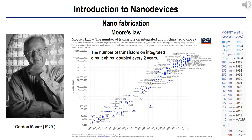Moore's Law is the observation that the number of transistors in a dense integrated circuit doubles about every two years. The observation is named after Gordon Moore, the co-founder of Fairchild Semiconductor and former CEO of Intel. Moore's prediction proved accurate for several decades and has been used in the semiconductor industry to guide long-term planning and to set targets for research and development. Advancements in digital electronics are strongly linked to Moore's Law — microprocessor prices, memory capacity such as RAM and flash, sensors, and even the number and size of pixels in digital cameras. Digital electronics has contributed to world economic growth in the late 20th and early 21st centuries. Moore's Law describes a driving force of technological and social change, productivity, and economic growth.